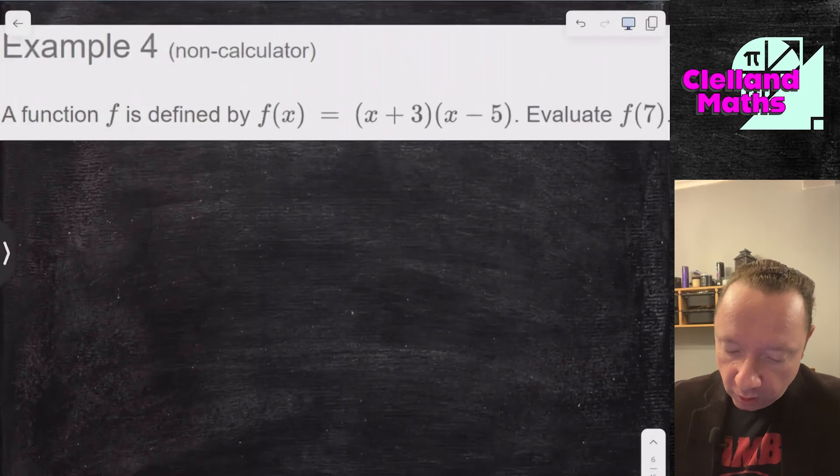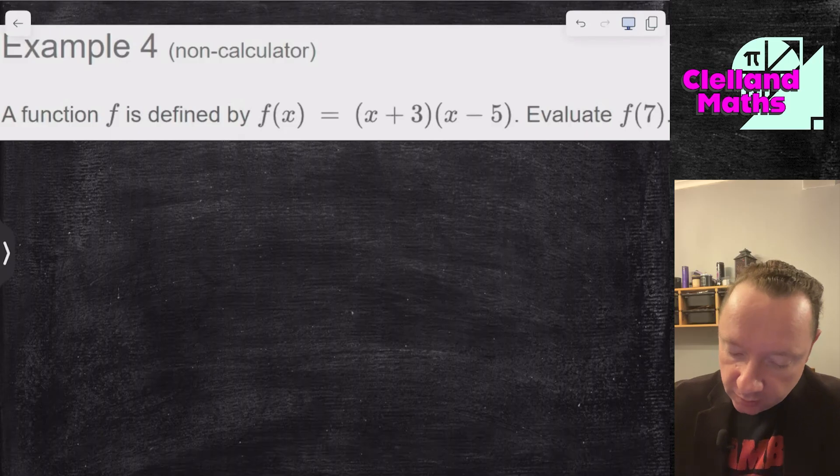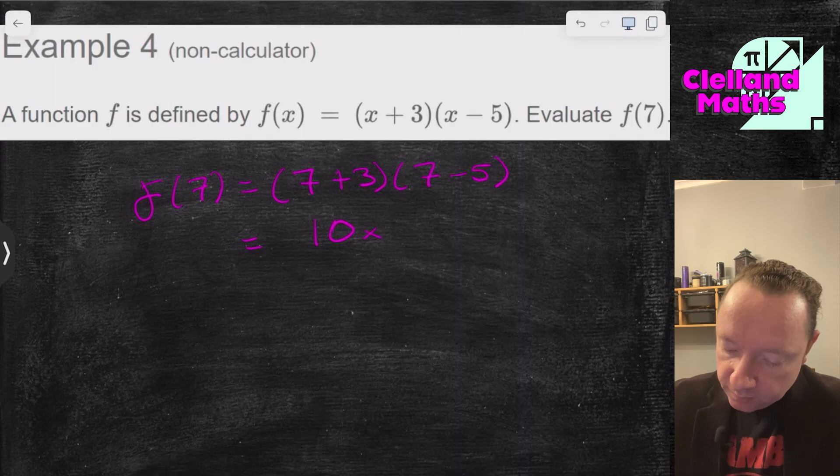Example 4. Function is defined as f of x equals x plus 3 times x minus 5. Find f of 7. So again, x becomes 7. 7 plus 3 times 7 minus 5. 7 plus 3 is 10. 7 minus 5 is 2. That is 20.